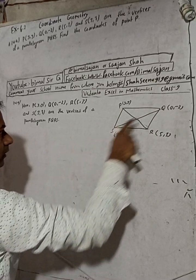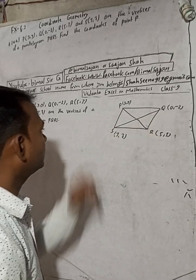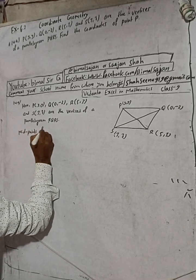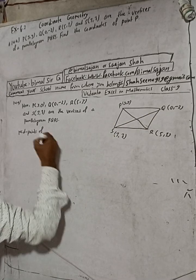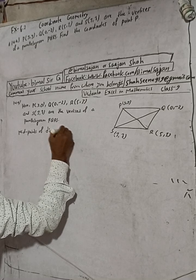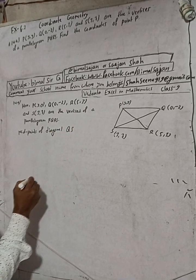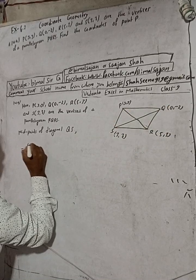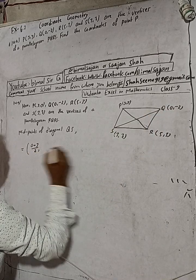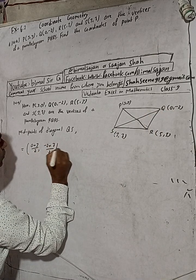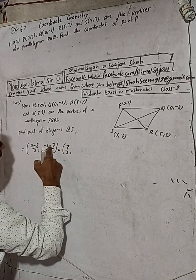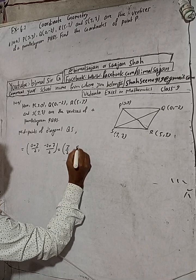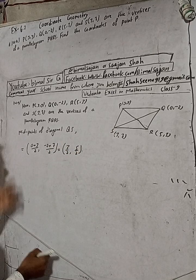We know the points of these diagonals, so we can find the midpoint of QS. Midpoint of diagonal QS is equal to the formula: (0+3)/2, (-2+7)/2, which equals (3/2, 5/2).